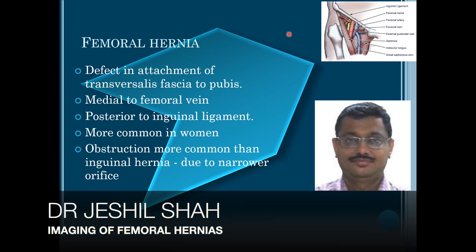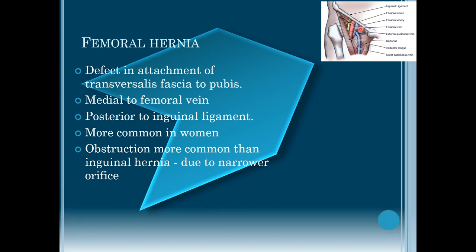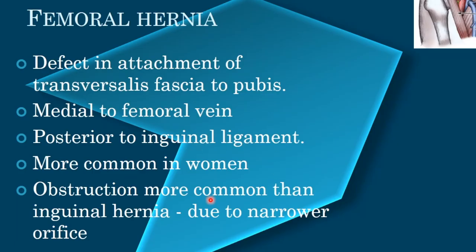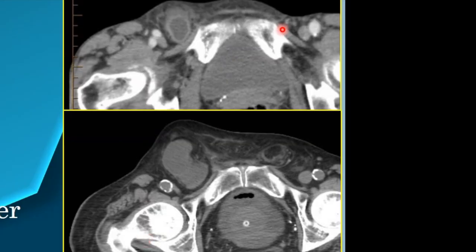Femoral hernias occur inferior to the inguinal ligament and lie medial to the femoral vein. The femoral structures are arranged as vein, artery, and nerve (VAN), and the hernia occurs medial to them. Femoral hernias are more common in women, and compared to inguinal hernias, obstruction is more common in femoral hernias because they have a narrower orifice.